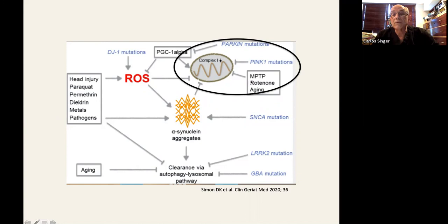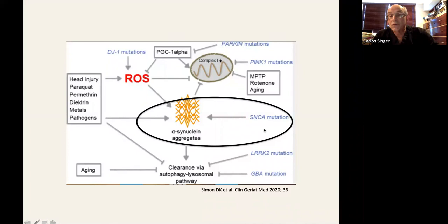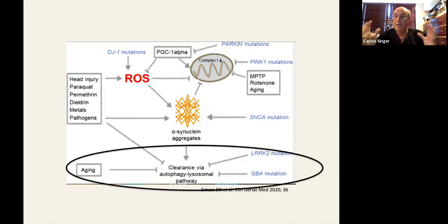In the case of the mutation we mentioned of alpha-synuclein, what you have is a production of a mutated synuclein that misfolds and aggregates. And in the case of the autosomal dominant mutations, you have defective clearance of the alpha-synuclein.